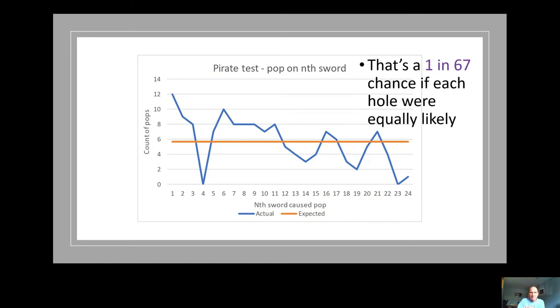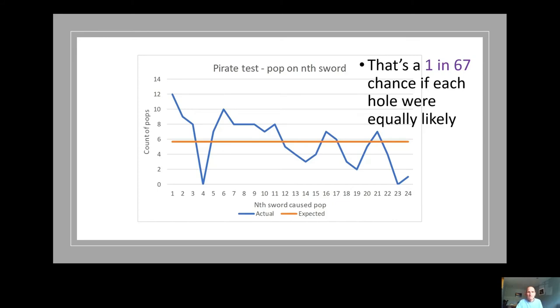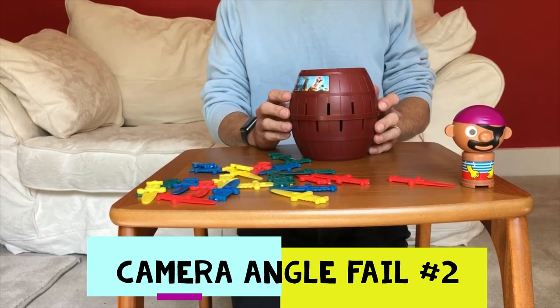Going back to our understanding of how it works, I think this points to the mechanical nature of the toy. I think what happens is that sometimes the mechanism doesn't quite get into position, and so it's susceptible to popping on the first sword, regardless of which hole is chosen.